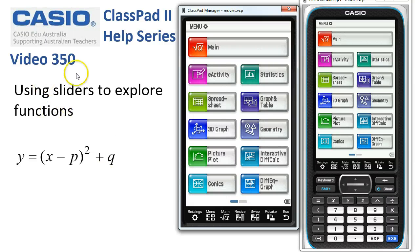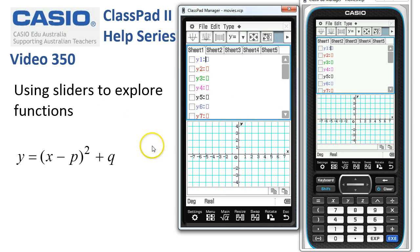Using sliders to explore functions. We'll start in graph and table, and here we want to put this function in and explore the effects of p and q on the graph of this parabola. So we need the keyboard up.